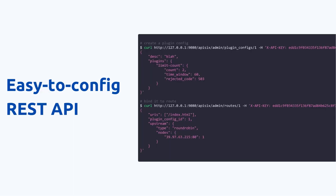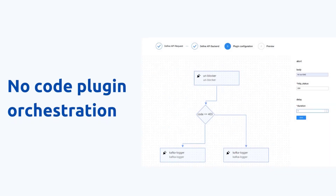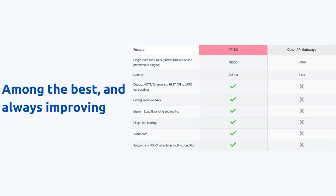Apache APISIX Admin API provides a RESTful interface for the administration and managing configuration for streams, routes, plugins, and consumers. All of the tasks you can perform against the API gateway can be done using easy configuration. With a plugin orchestration capability, you can easily orchestrate all existing plugins in a drag-and-drop way on the UI dashboard. This reduces the development cost of new API gateway plugins to almost zero.